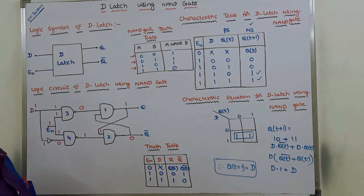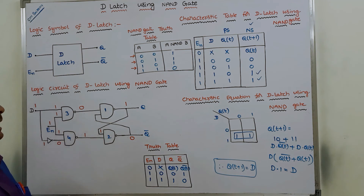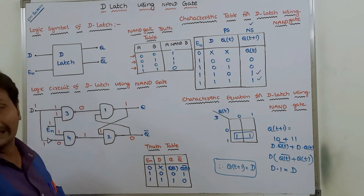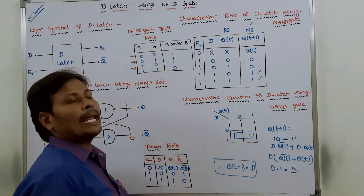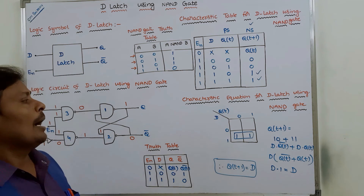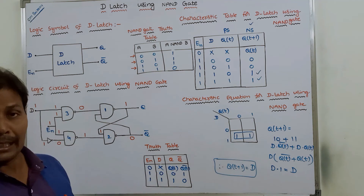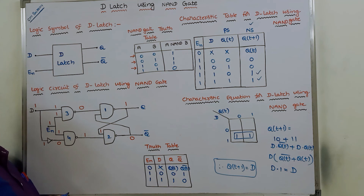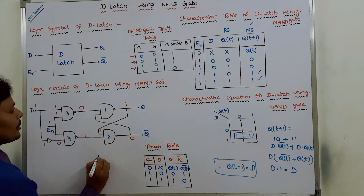This is the logic symbol for D latch, and this is the logic circuit of D latch using NAND gates. This is the NAND gate truth table and the truth table for D latch using NAND gates. This is the characteristic table and the characteristic equation for D latch using NAND gates: Q(t+1) = D. I hope all of you understand this video. If you do, please click the like button and share this video with your friends and classmates. If you have any doubts, please put them in the comment section and I will try to clarify.